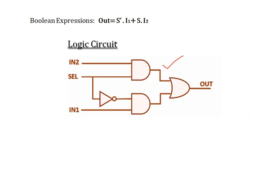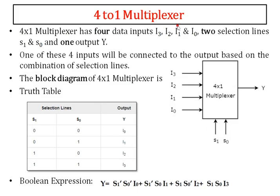Next we will see the 4-to-1 multiplexer. It has 4 input lines and 1 output line. 4 input lines means 2 power 2, so there are 2 selection lines and 1 output line. This is the block diagram of the 4-to-1 multiplexer with 4 inputs, 2 selection lines, and 1 output line.